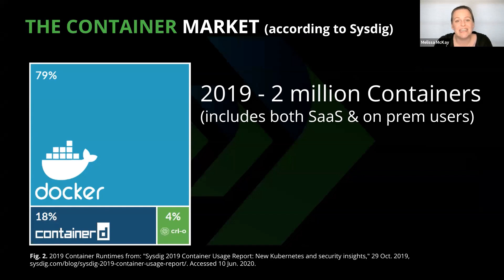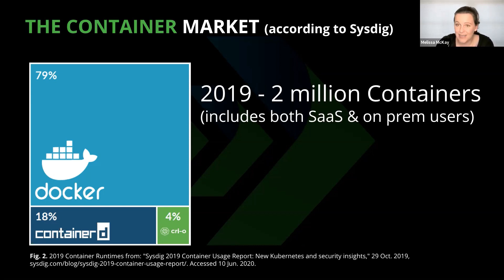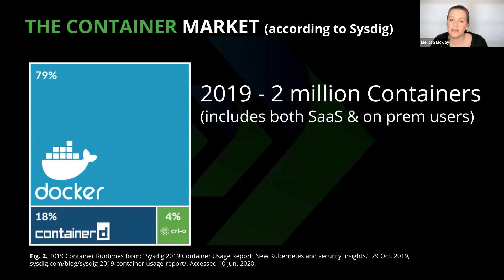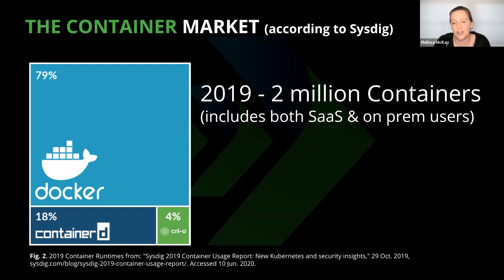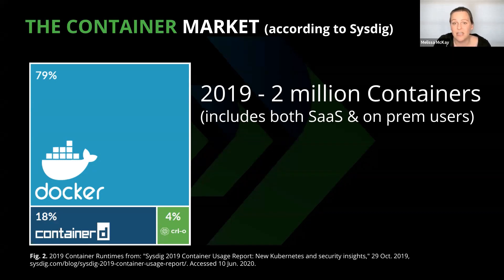Moving on to 2019, this Sysdig container report included stats from over 2 million containers — you can see how fast usage has grown. Docker is still holding relatively strong at 79%, and 18% is containerd, though it's worth noting that containerd is a runtime that Docker actually builds on top of. Something to note is the disappearance of Rocket. CoreOS was acquired by Red Hat at the beginning of 2018. Rocket was accepted to the CNCF as an incubating project, but since the CoreOS acquisition, development went dormant. In mid-2019 it was archived by the CNCF, and in February 2020 the project was ended.